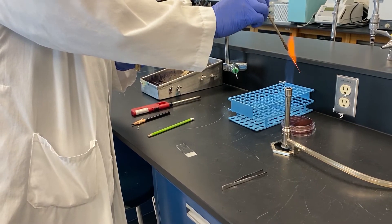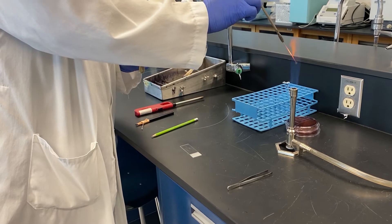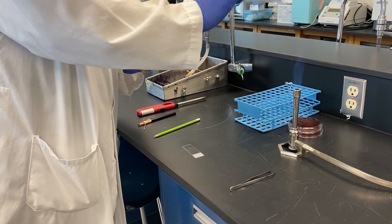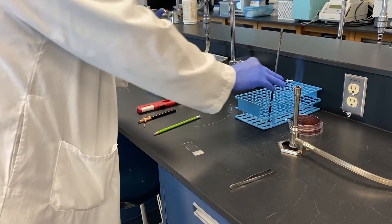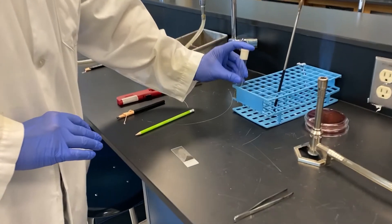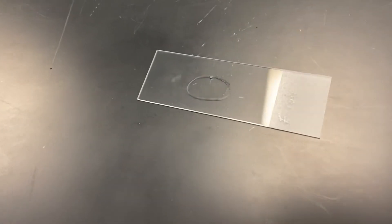When you are done adding your culture to the slide make sure you sterilize your loop before putting it away. Test tube racks make a great tool for storing your loop while working at the bench. This slide is now ready to be heat fixed. We'll show you how to do that in just a minute.